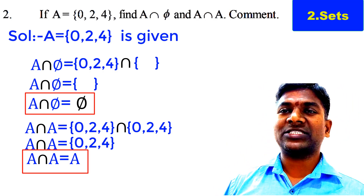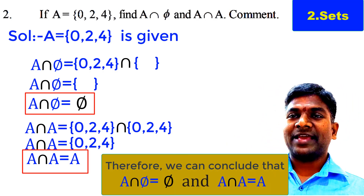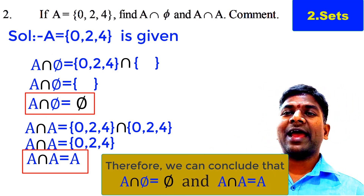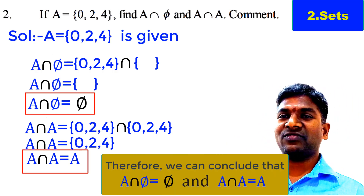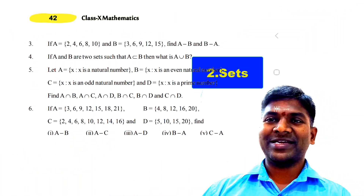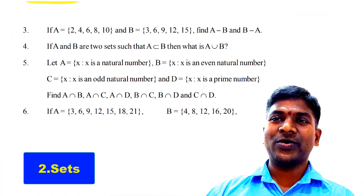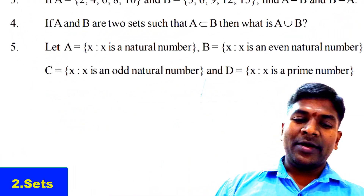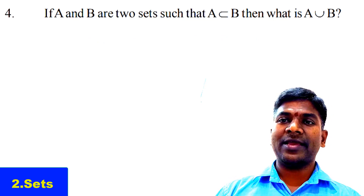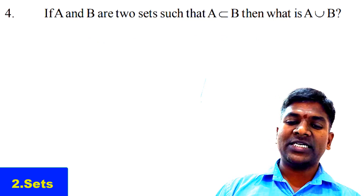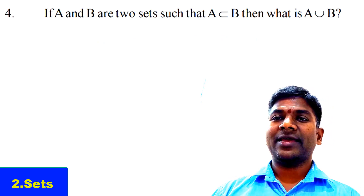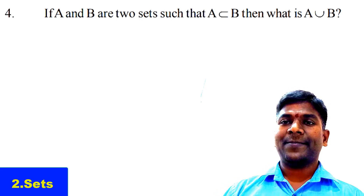So to summarize: A intersection A = A, and A intersection ∅ = ∅. Now let's take the fourth question from Exercise 2.2: If A and B are two sets such that A ⊆ B, what is A union B? Explain with an example.